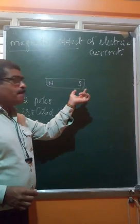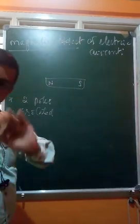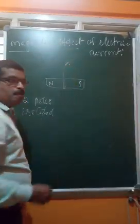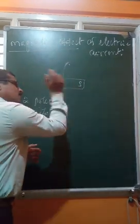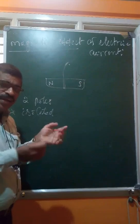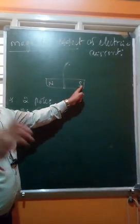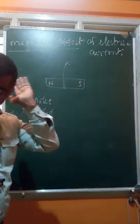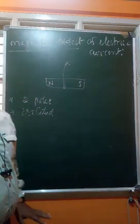To identify which end is the north pole and which is the south pole, hang or suspend the magnet freely and give it a tap. It will start rotating and eventually come to rest. The end pointing toward geographic north is the north pole and the end pointing toward the south is the south pole. This is how we identify the two poles.